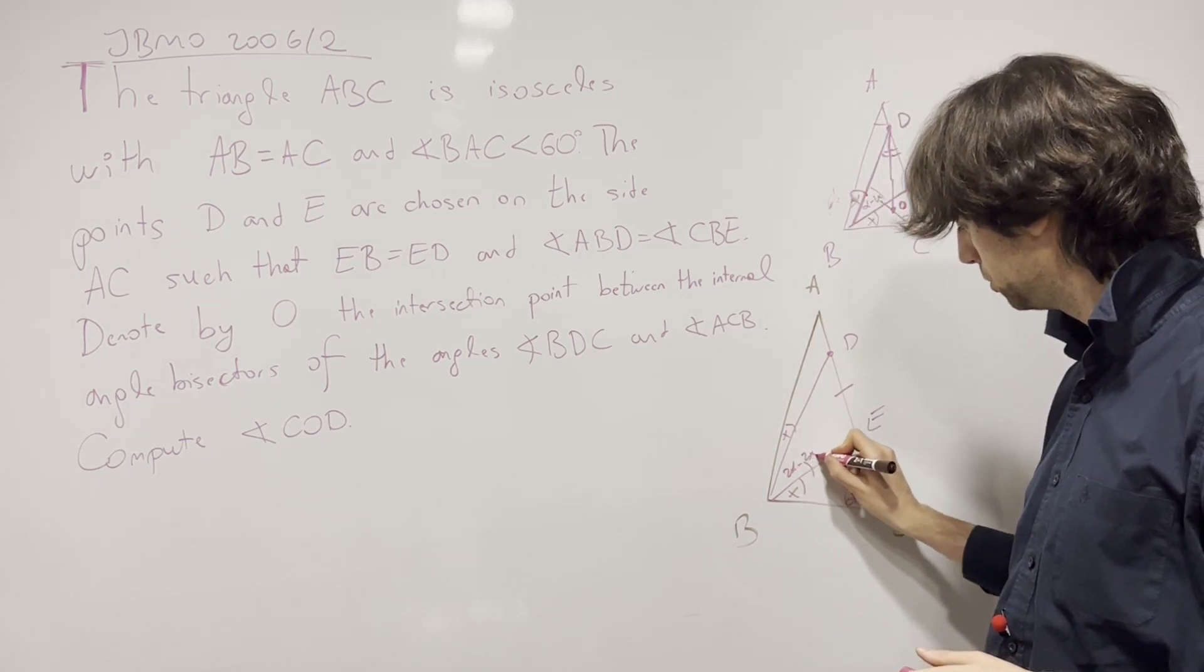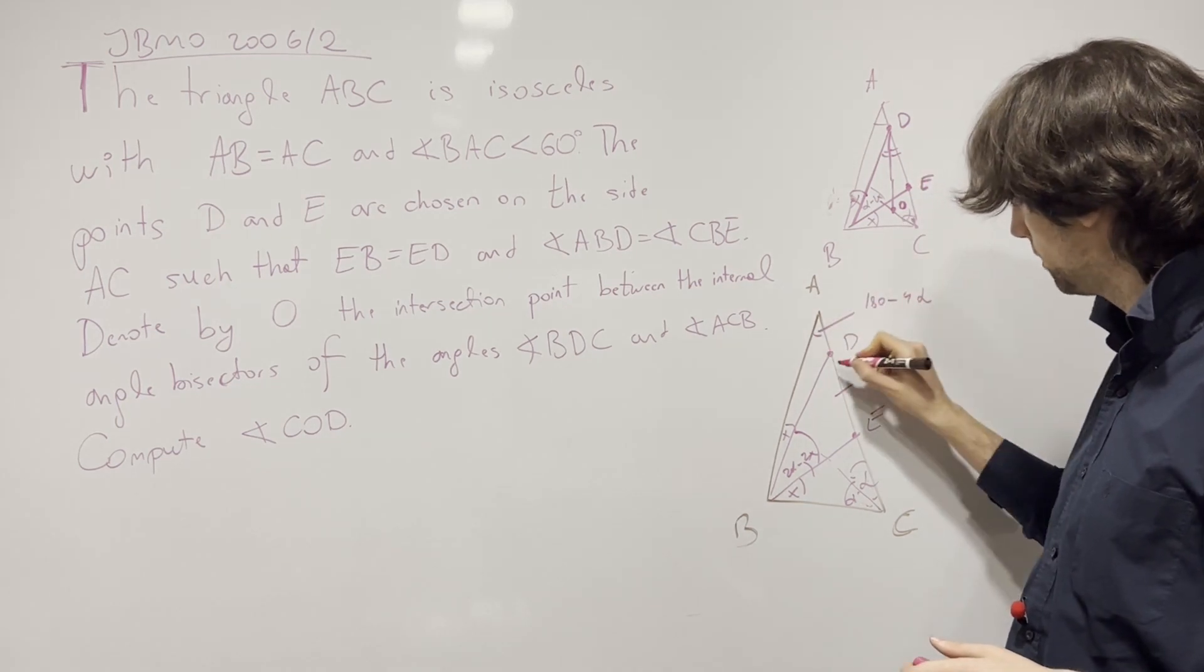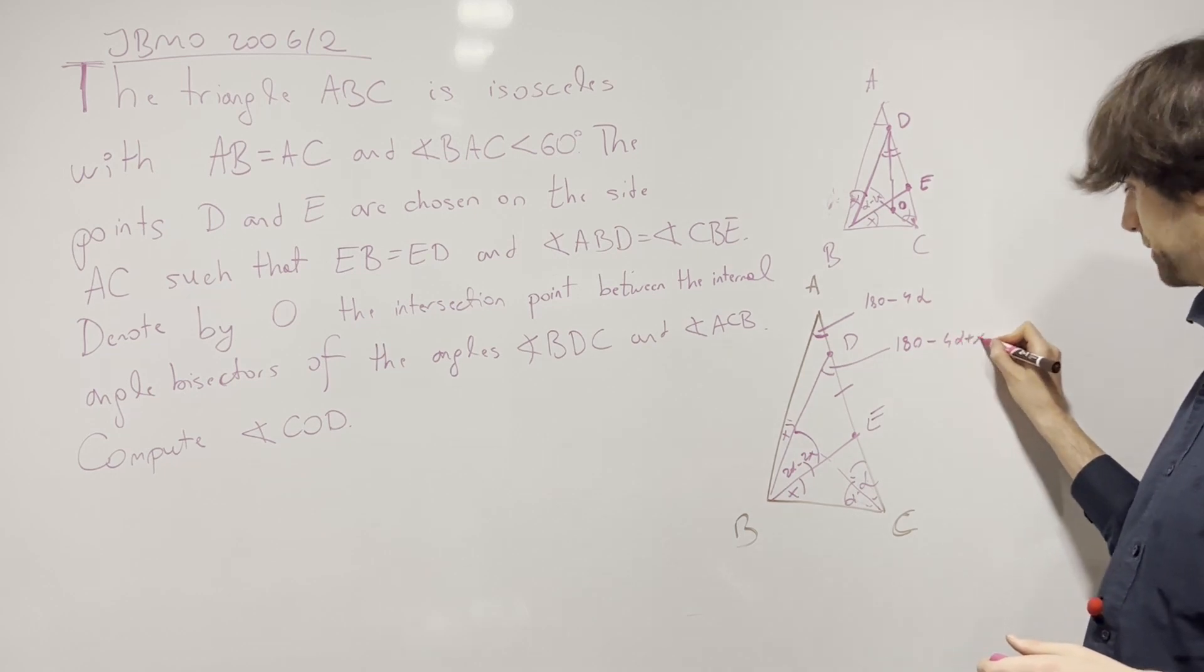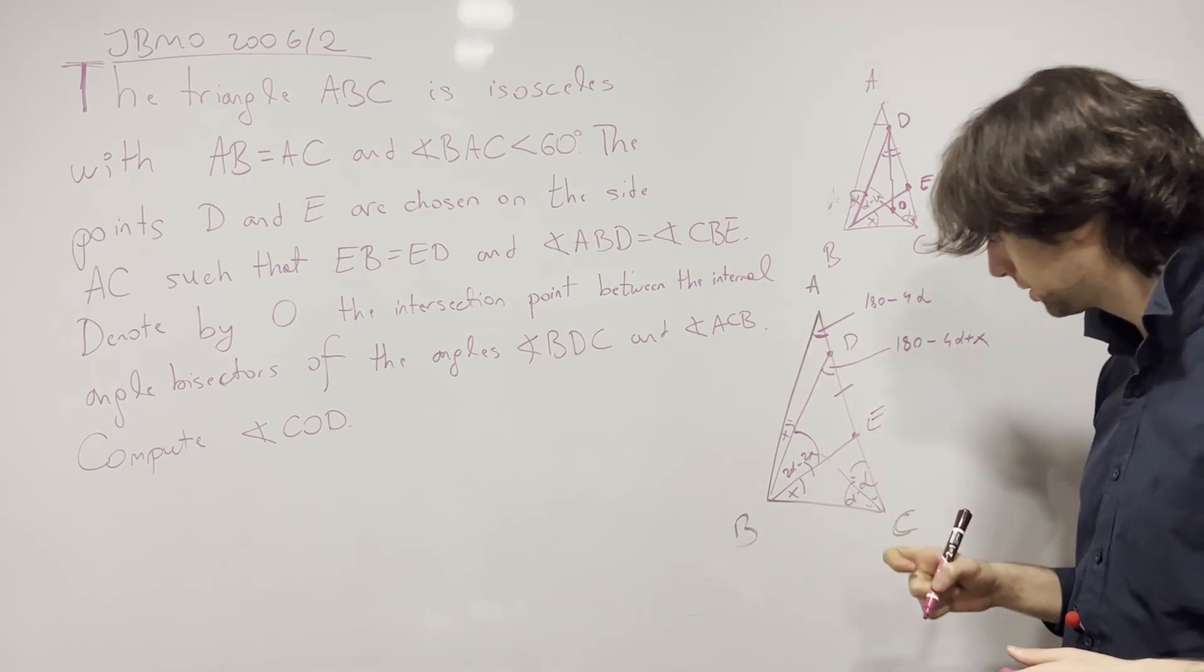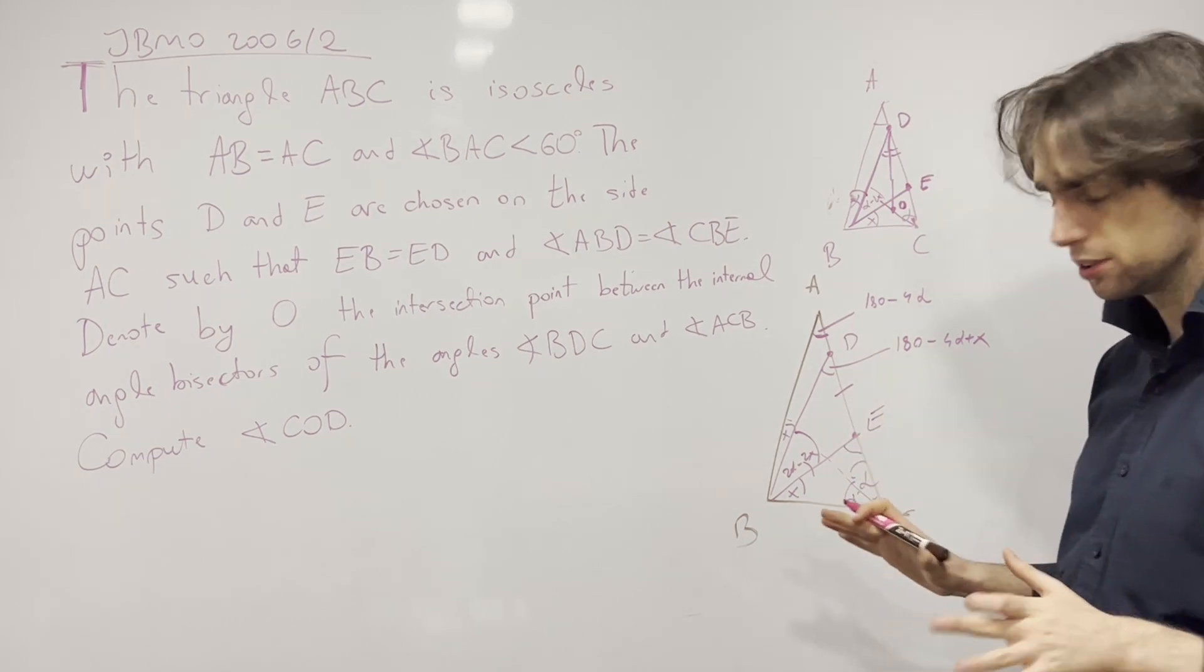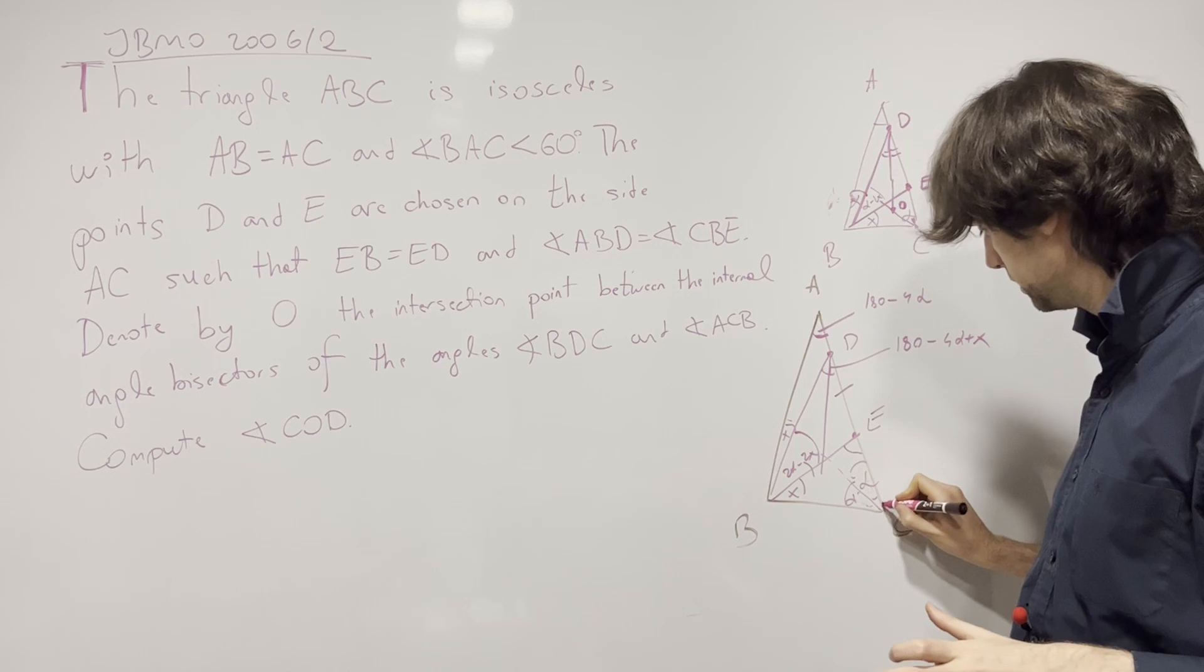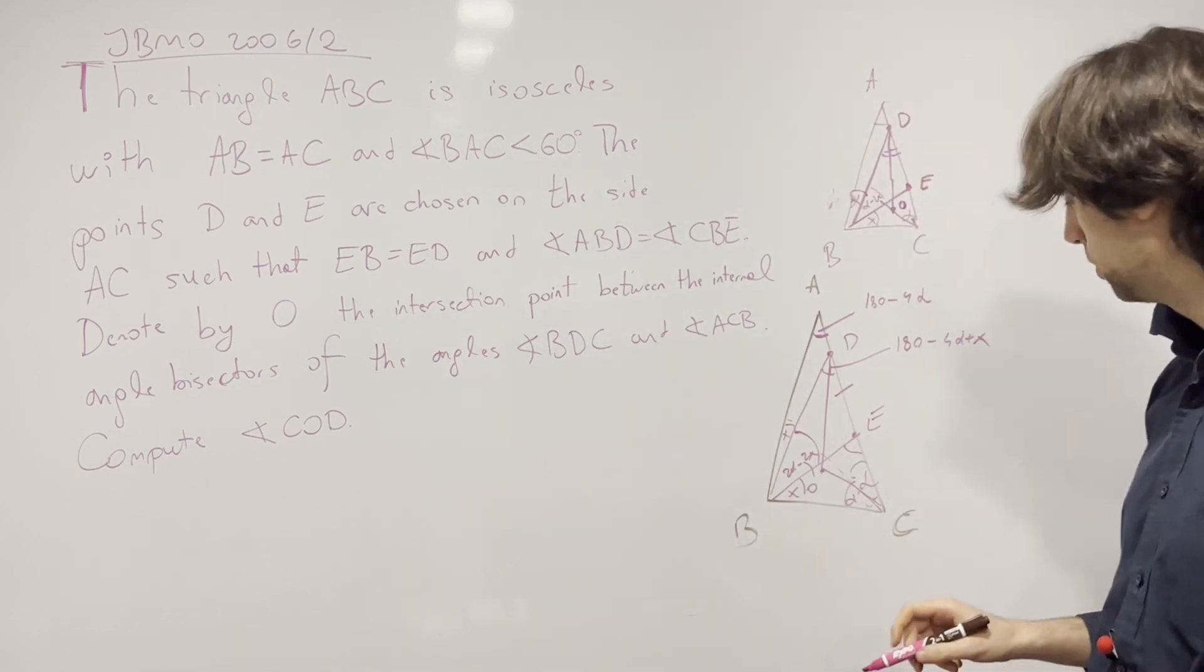Let's first now see before doing this angle bisector, what does this condition for E and D give us as to the angles? This angle is X equals this one. This one is 2 alpha minus 2X. This whole thing 180 minus 4 alpha. So this whole thing equals 180 minus 4 alpha plus X. And we're going to have that angle bisector.